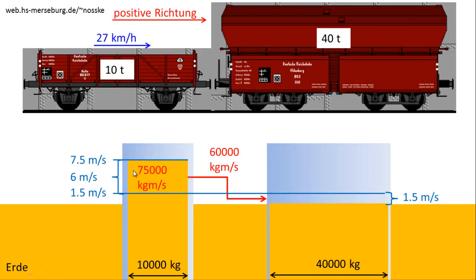Was hier weggeht, muss dann auch hier Platz haben. Der Impuls fließt während der Stoßphase durch die Puffer. Auf der anderen Seite haben wir 1,5 m/s Anstieg des Pegels mal den Querschnitt, das gibt wieder 60.000. Wie schnell das geht, hängt von der Konstruktion dieser Puffer ab. Damit wollen wir uns im nächsten Video beschäftigen.